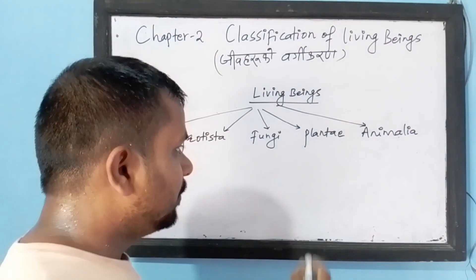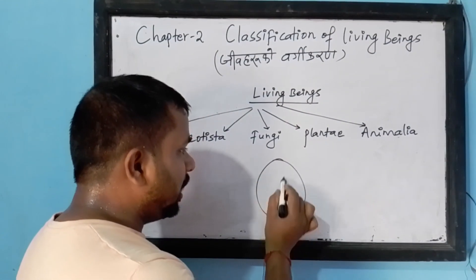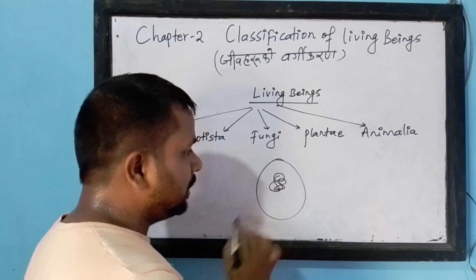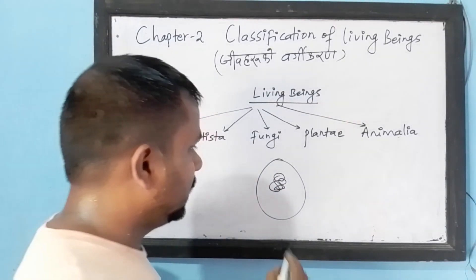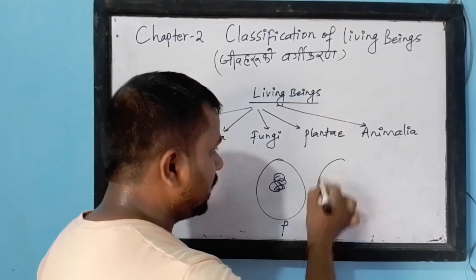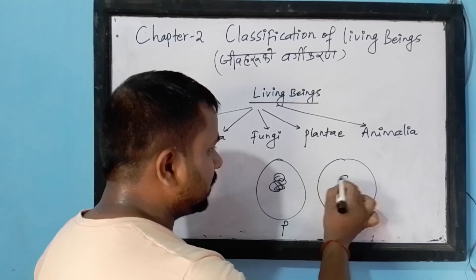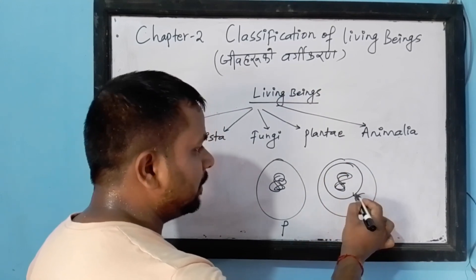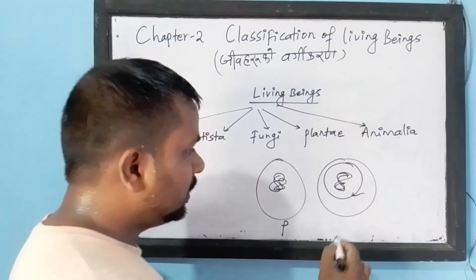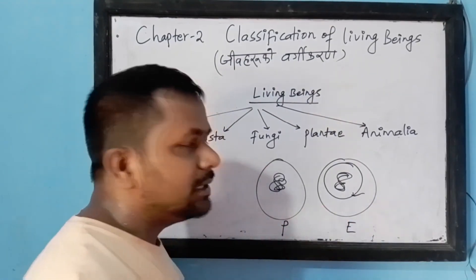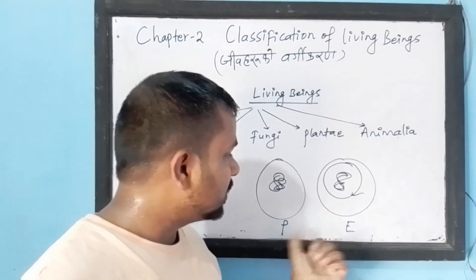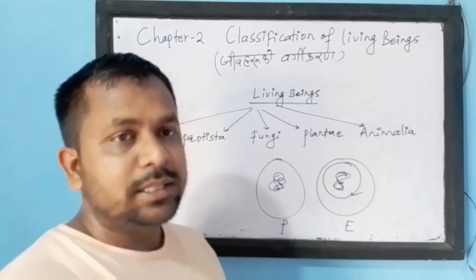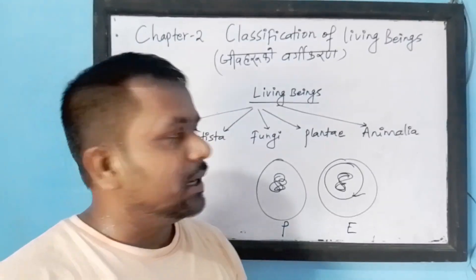In a prokaryotic cell, there is a cell but a well-developed nucleus is absent — there is no nuclear membrane surrounding the nucleus. This is the prokaryotic cell. But in a eukaryotic cell, there is a well-developed nuclear membrane surrounding the nucleus.